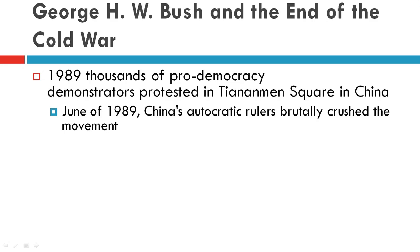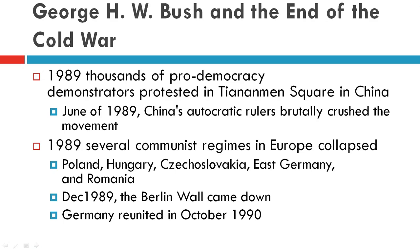In 1989, there were thousands of pro-democratic demonstrators in Tiananmen Square in China. In June of 1989, China's autocratic rulers brutally crushed the movement. Also in 1989, several communist regimes in Europe collapsed — Poland, Hungary, Czechoslovakia, East Germany, and Romania.